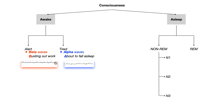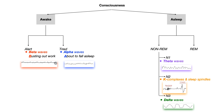The N stands for non-REM1, non-REM2, and non-REM3. Each of these three stages - N1, N2, and N3 - have their own EEG waveforms. The N1 stage is characterized by theta waves. The N2 stage is characterized by both K complexes and sleep spindles. The sleep spindle is the really fine, close-together squiggly lines, and the K complex looks more like what you might see on an ECG - an upward spike and a downward deflection.